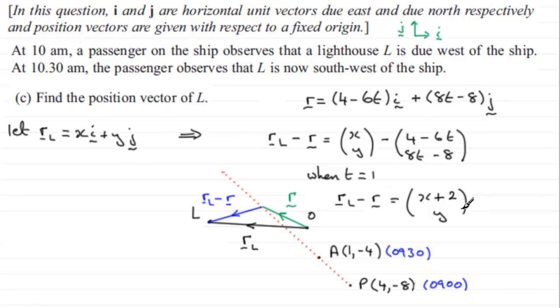x plus 2 in the i direction, y units in the j direction. But we're told that the lighthouse is due west of the ship at this time. So if you're due west of the ship, this line here would be horizontal. It should be just straight out horizontal. So we know now that y must be 0. I'll just write that in, that since L is due west, then y must equal 0. So we've got y.